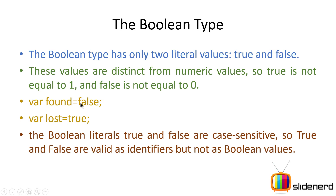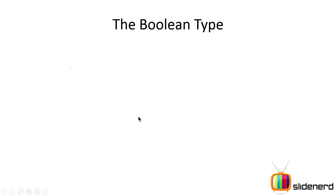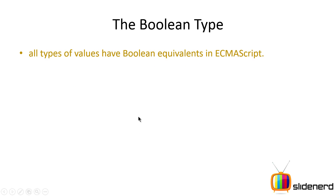These values, true and false, are case sensitive. A capital T will differ from the lowercase version shown here. So make sure that everything is lowercase when you're writing these values. Now let's take a look at the boolean function.